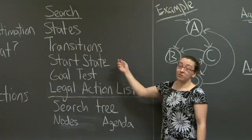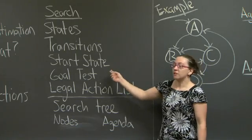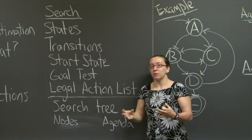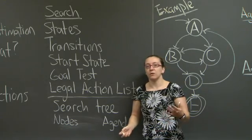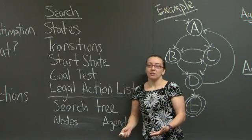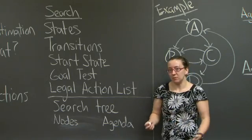We're going to want the start state to be specified so we know where to begin. We want a goal test which specifies what we're looking for as a consequence of the search. If we get to a state and we want to know whether we're done, we use our goal test. It could look at the output of the state or the state name.